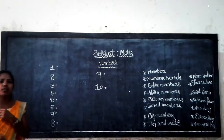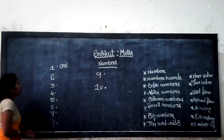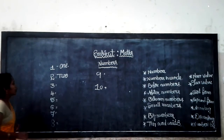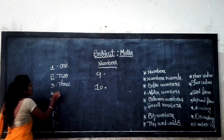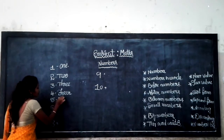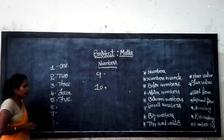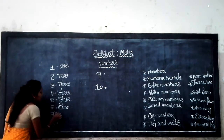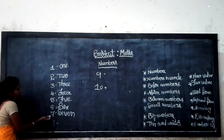Number 1 — what is the spelling? O-N-E. Number 2 — T-W-O. Number 3 — T-H-R-E-E. Number 4 — F-O-U-R. Number 5 — the spelling is F-I-V-E. Number 6 — S-I-X. Number 7 — E-V-E-N, written as 7.